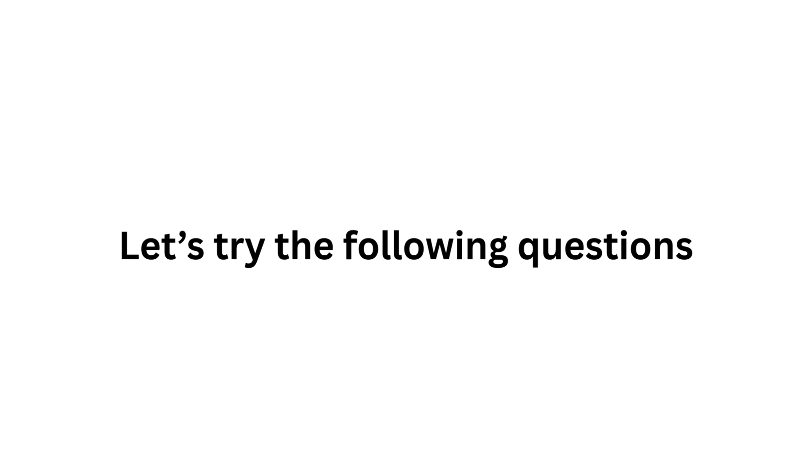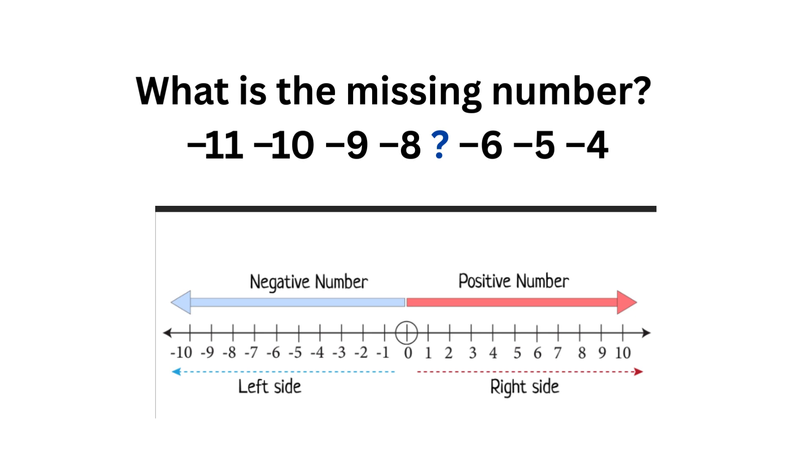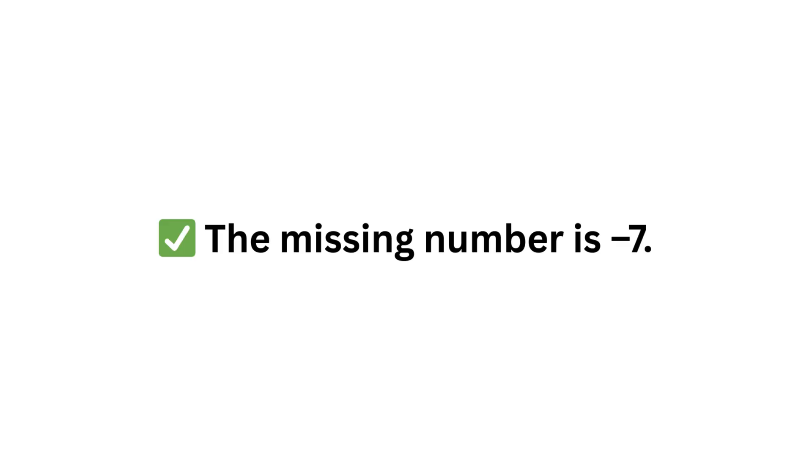We're going to try some questions now and we'll work out the answers together. What is the missing number? We have the number line to help us here. So we have minus eleven, minus ten, minus nine, minus eight. And if we look at the number line, what is the number between minus eight and minus six? The number is minus seven. And remember, it must have a minus in front of it, otherwise it's not a negative number.